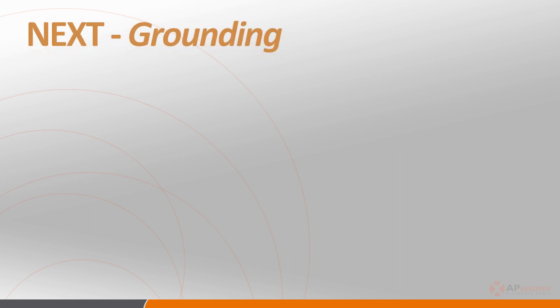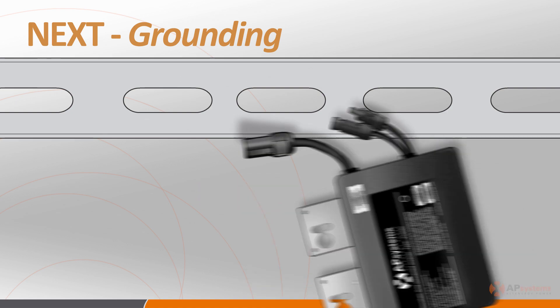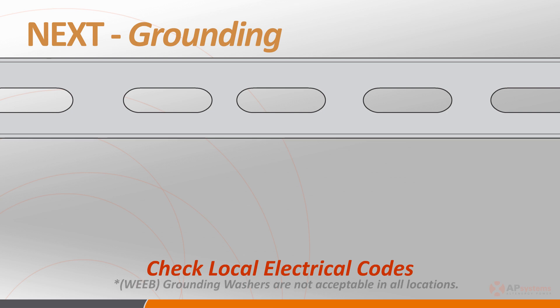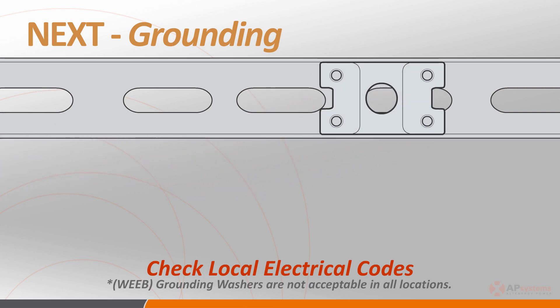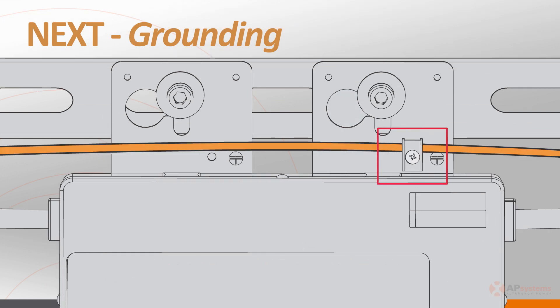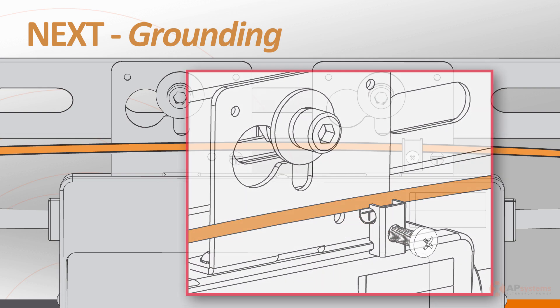The next step is making sure that the inverters are properly grounded throughout the system. The YC500i has a ground wire integrated into the cable; however, code may require an external ground. Depending on your jurisdiction — and it's always best to check with your local inspector — you can either use a grounding washer when attaching the inverter to the rail of a well-grounded racking system, or you can use the grounding lug on the YC500i to string code-approved wire to an appropriate system grounding location.